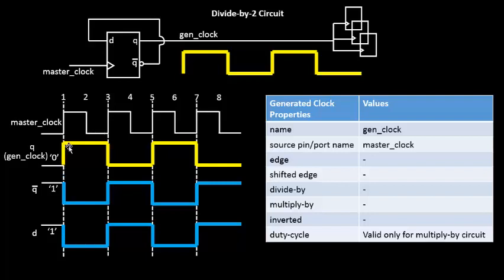For example, if you look at this particular waveform, the rising edge of the generated clock starts at the first clock edge of the master clock. So the rising edge of the generated clock starts at the first edge of the master clock. It could be a rise or fall edge — anything.